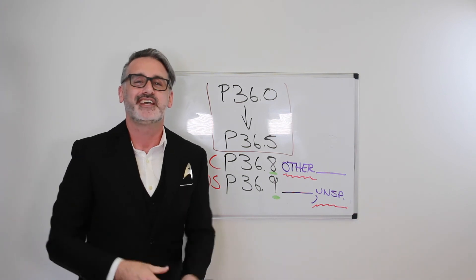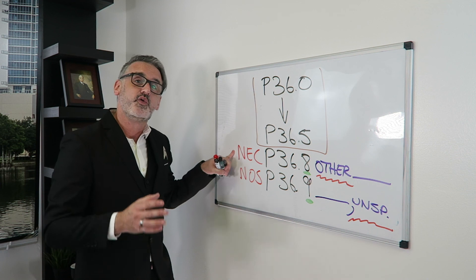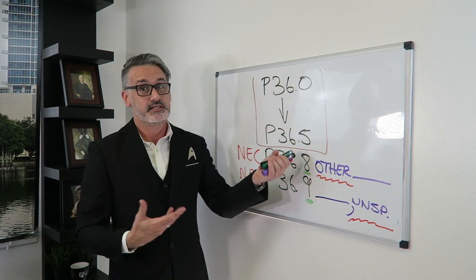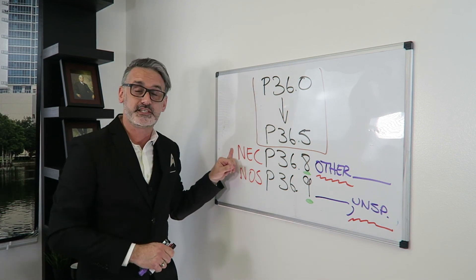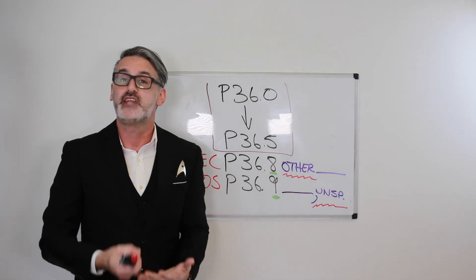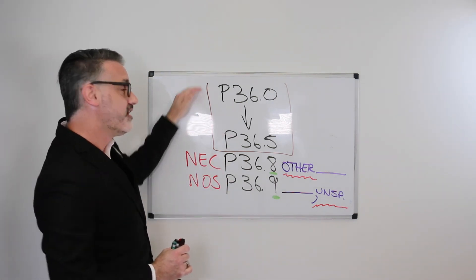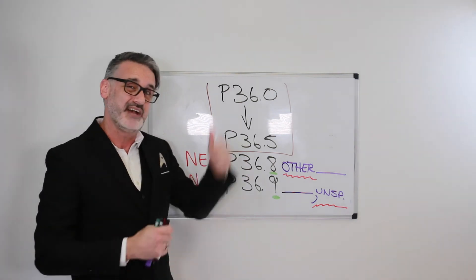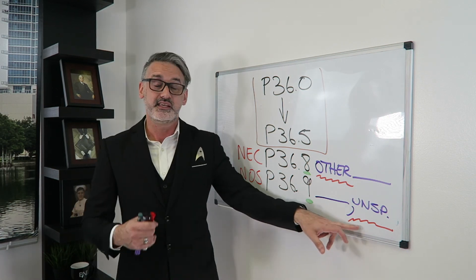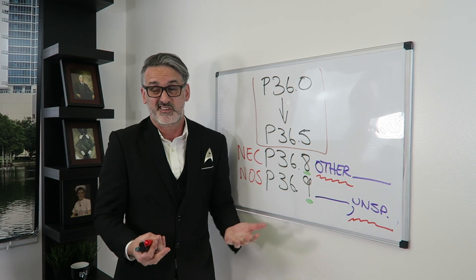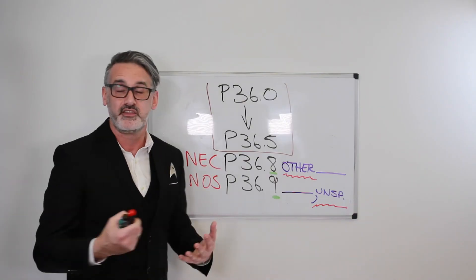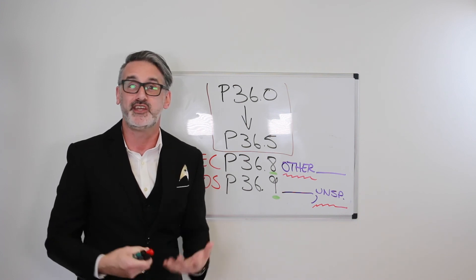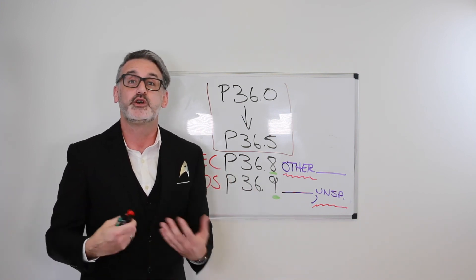So again, the key differences between NEC and NOS: NEC code descriptions will always — 100% of the time — begin with 'other [blank],' where the blank is whatever category you're discussing. In this case, P36.8 is 'other bacterial sepsis of the newborn.' You know what kind the patient has, but it doesn't fit any of the codes above it. P36.9 is the NOS unspecified — poor documentation, so you have no idea what kind of bacterial sepsis of the newborn the patient has.